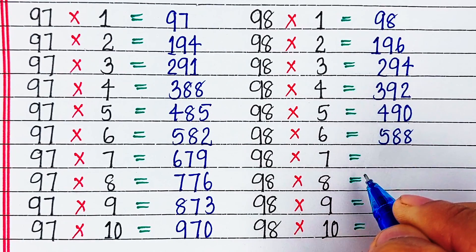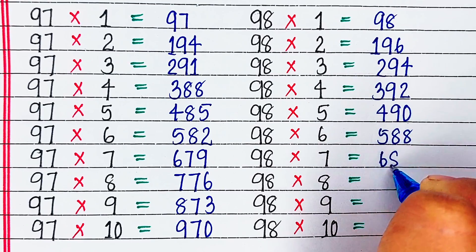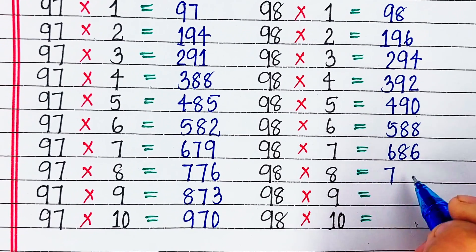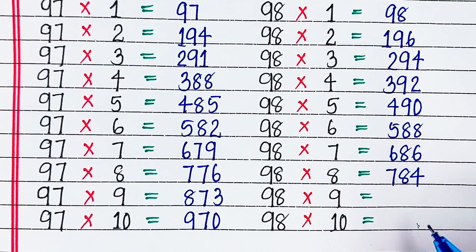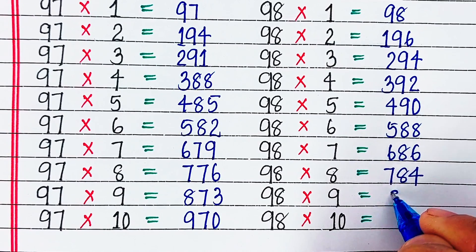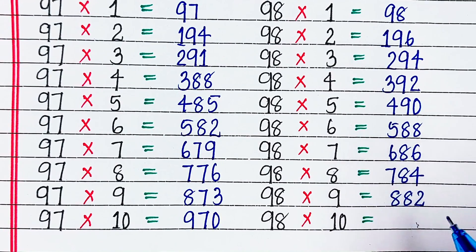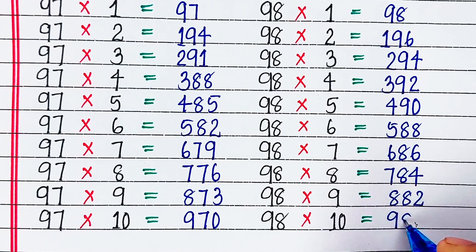98 sevens are 686. 98 eights are 784. 98 nines are 882. 98 tens are 980.